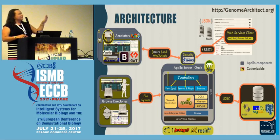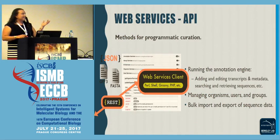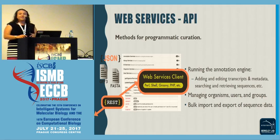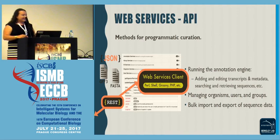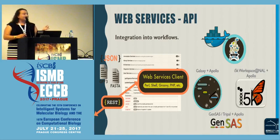In the past 11 months since we last saw each other, the architecture hasn't changed much. But what has changed is improvements to the web services API. This allows administrators or curators to do programmatic curation — you can talk directly via the API to run the annotation engine by adding or editing transcripts and metadata, managing organisms, or doing bulk imports and exports of data. Because we have a completely exposed API, we're now able to integrate with other workflows and tools.